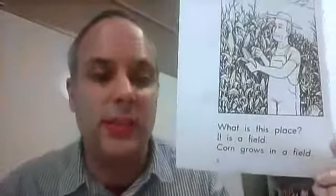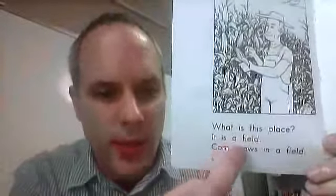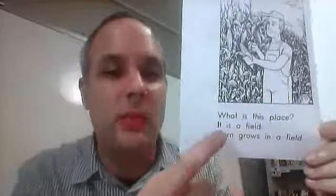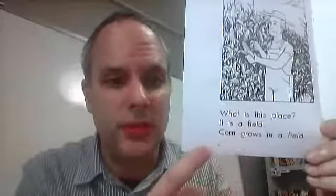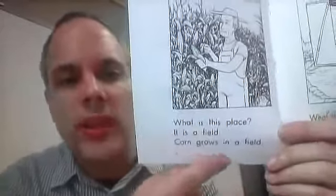What is this place? It is a field. So this word, the I and E together have an E sound. Field. Corn grows in a field.